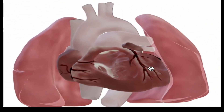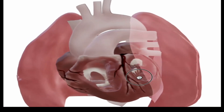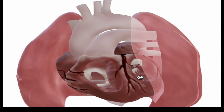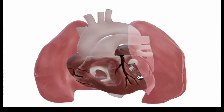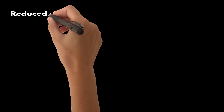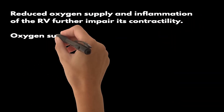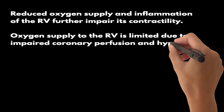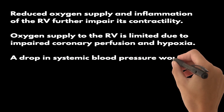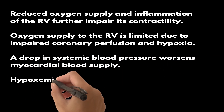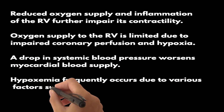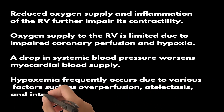Reduced oxygen supply and inflammation of the RV further impair its contractility. Oxygen supply to the RV is limited in acute PE due to impaired coronary perfusion and hypoxia. A drop in systemic blood pressure worsens myocardial blood supply. Hypoxemia frequently occurs due to various factors such as overperfusion, atelectasis, and intracardiac shunting. Neurohumeral activation and the subsequent inflammatory response contribute to myocardial damage and dysfunction.